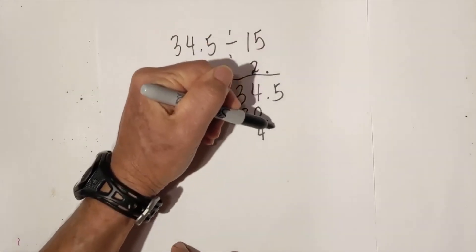34 divided by 15 looks like 2. 2 times 15 is 30. I will subtract. I will bring down. 15 into 45 is, that is 3. 3 times 15 is 45. We have 0. Nothing else to bring down. So 34 and 5 tenths divided by 15 equals 2 and 3 tenths.